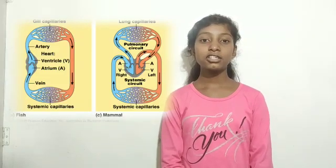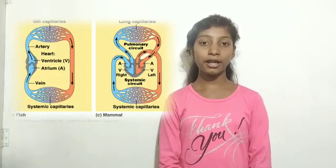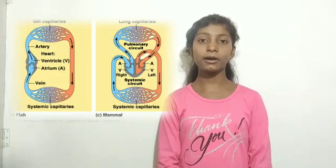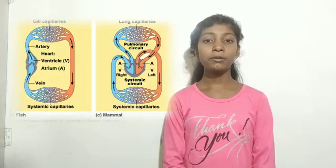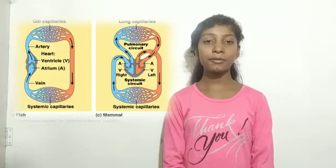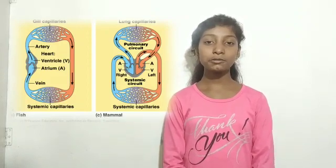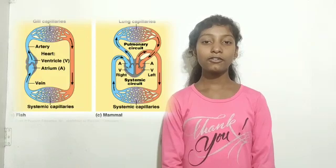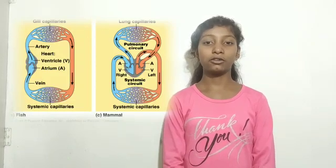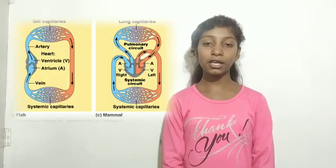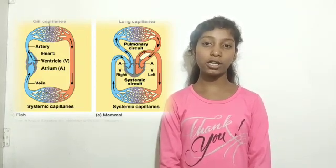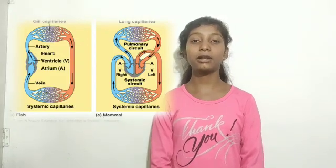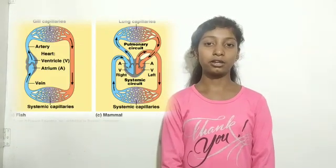In double circulation, the blood passes through the heart twice. For example, in human beings, the blood first enters the right side of the heart, goes to the lungs, then comes back to the left auricle and passes through the heart again. So it passes two times — this is the example of double circulation, with one circuit carrying oxygenated blood and one carrying deoxygenated blood.